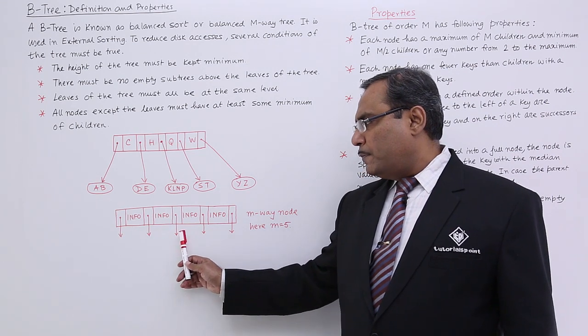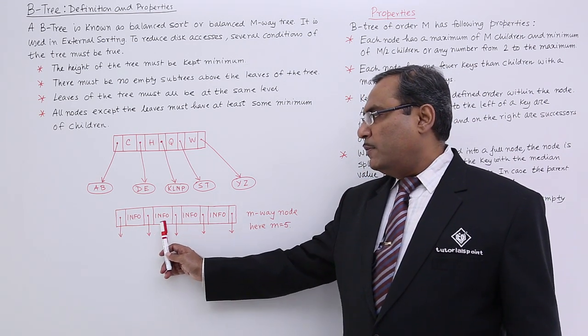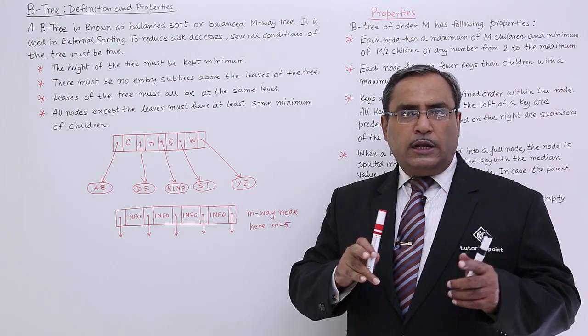It will have M number of links and M minus 1 number of info. That will be the node structure.